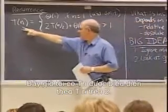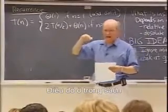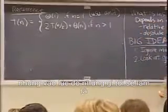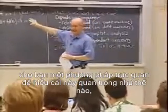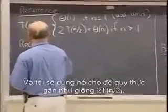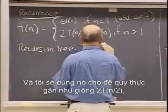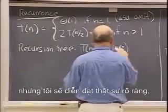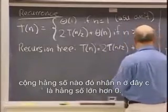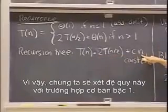How do we solve a recurrence like this? I now have T(n) expressed in terms of T(n/2). That is in the book and also in lecture two. What I am going to do is give you a visual way of understanding what this costs, which is one of the techniques we will elaborate on next time. It is called a recursion tree technique. I will use it for the recurrence 2T(n/2) plus some constant times n, where c is a constant greater than zero.